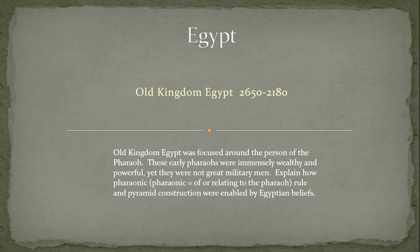So we can get a sense for just how powerful these pharaohs were. I'd like you to gather your notes and answer this question: Old Kingdom Egypt was focused around the person of the pharaoh — these early pharaohs were immensely wealthy and powerful, yet they weren't great military men. Explain how pharaonic rule and pyramid construction were enabled by Egyptian beliefs. Then go on to our second lecture. We'll see you next time.